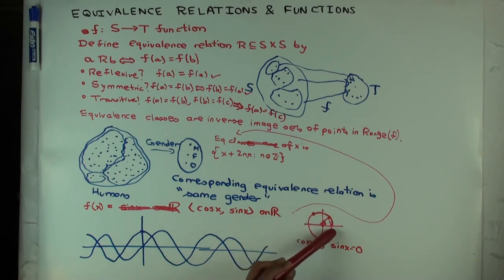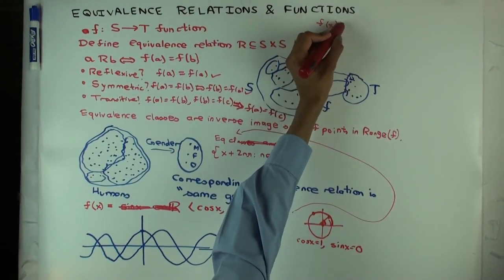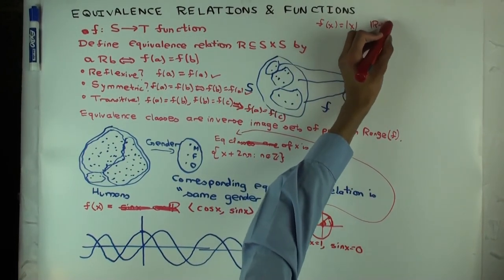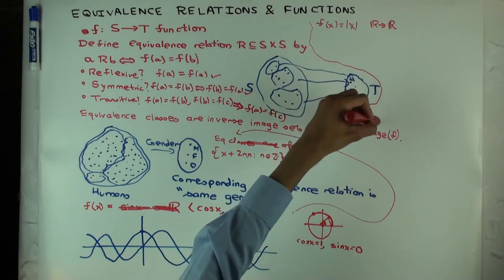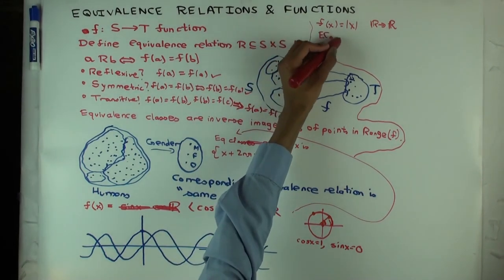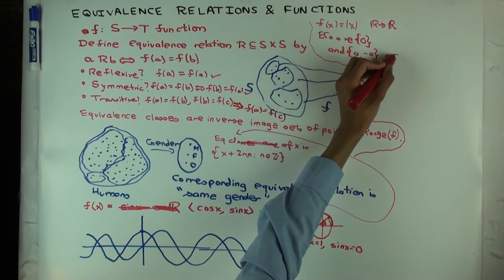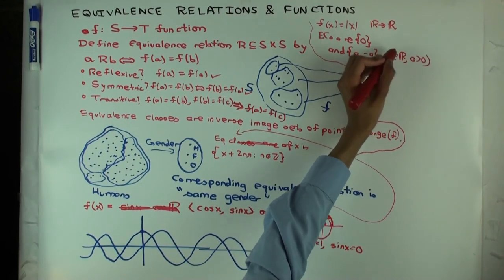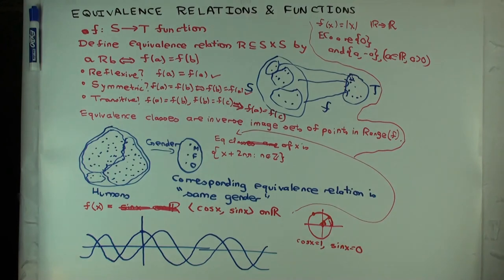Let's take a simpler example: f(x) = |x|. What are the equivalence classes? There's one equivalence class of size 1, which is {0}. All the others have size 2, of the form {a, −a} where a is positive. The equivalence class for −a is the same as for a, so you can restrict a to be positive and that covers all the equivalence classes.